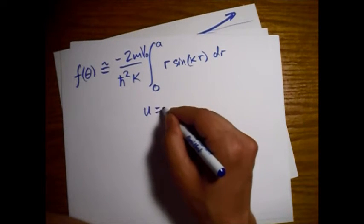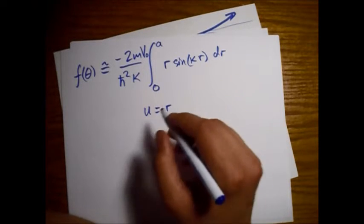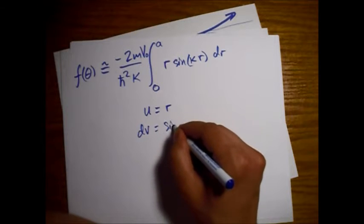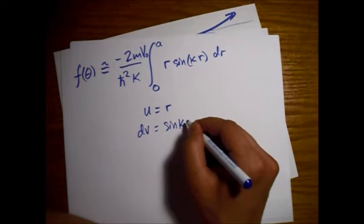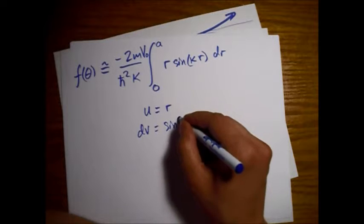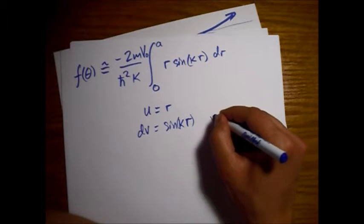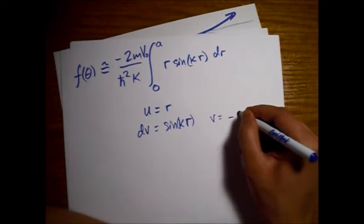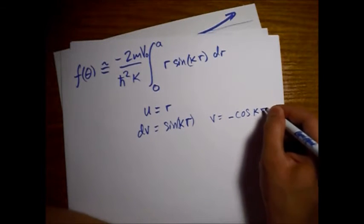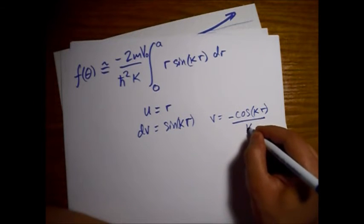We'll use integration by parts. Let u equal r and dv equal sine of kappa r dr, so that v equals minus cosine of kappa r divided by kappa.